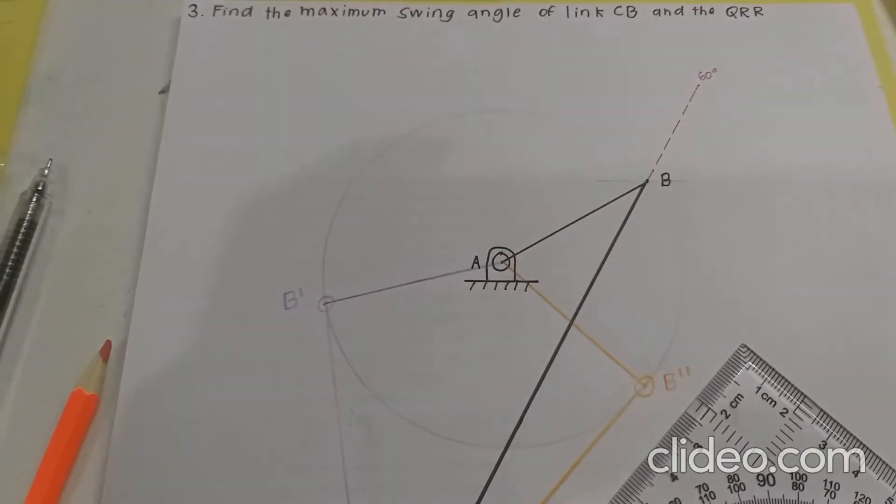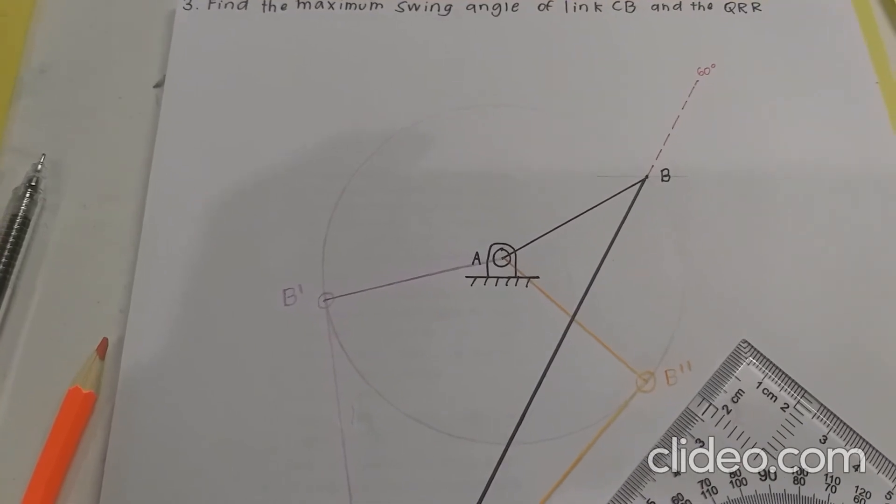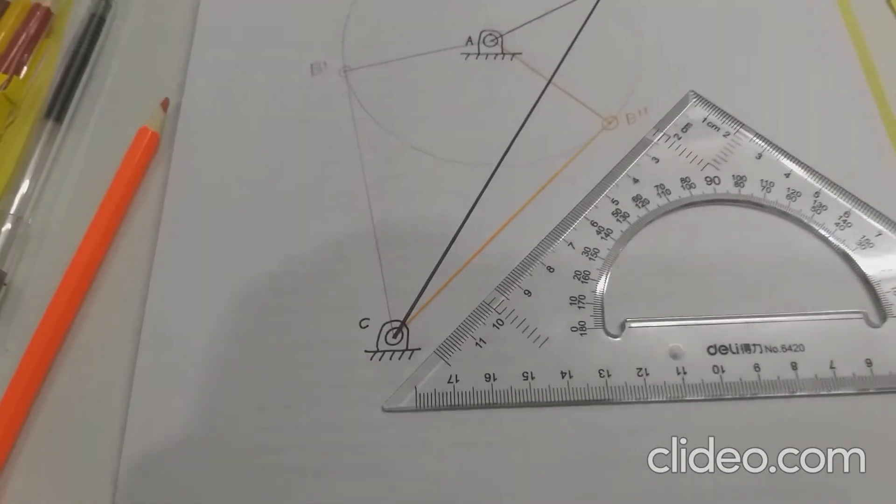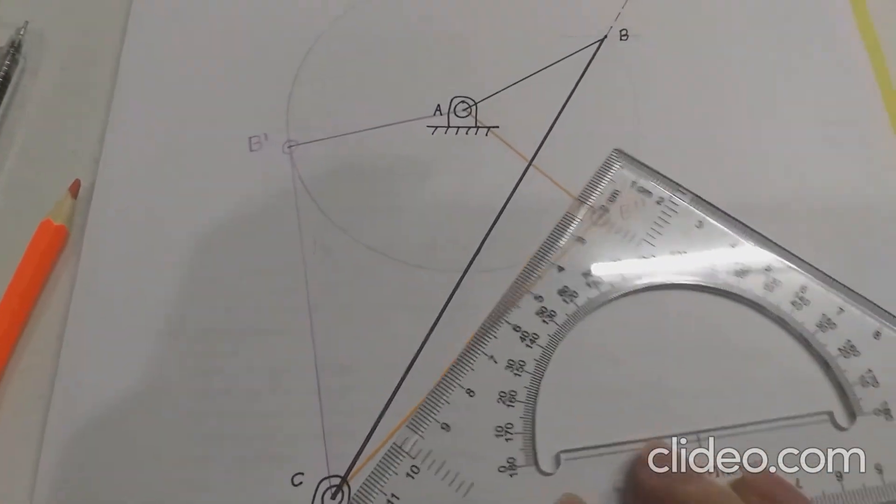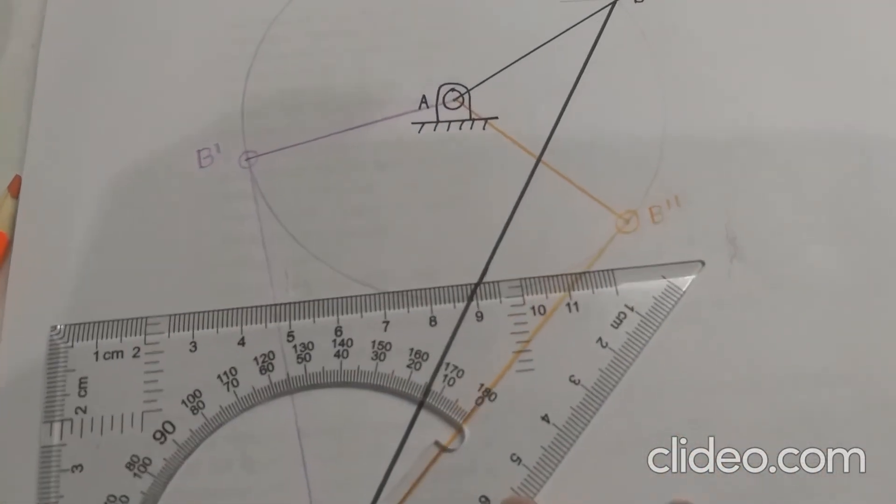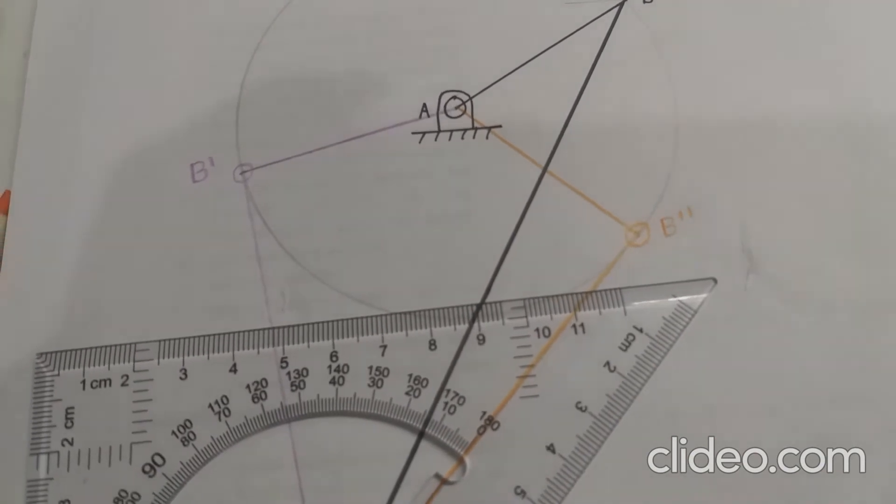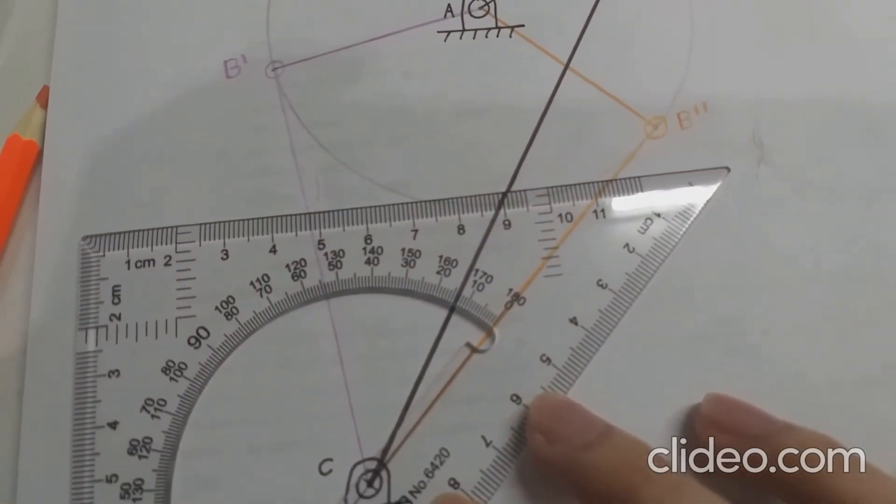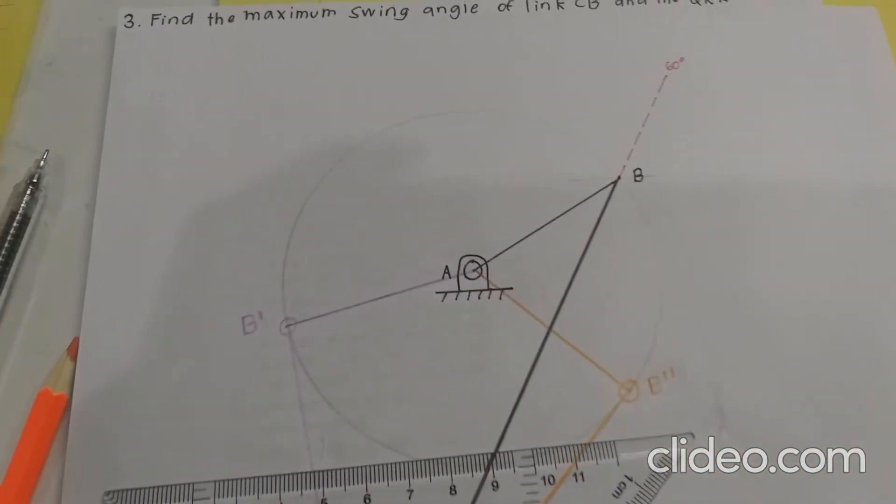Now that we've made B prime and B double prime, we can now find the maximum swing angle of link CB. So measuring this, we have about 54 to 55 degrees of maximum swing angle.